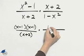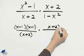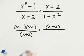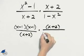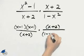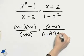In the second fraction, we have x plus 2, which is already factored. And in the denominator, we have the difference of two squares, which factors into 1 minus x, 1 plus x.